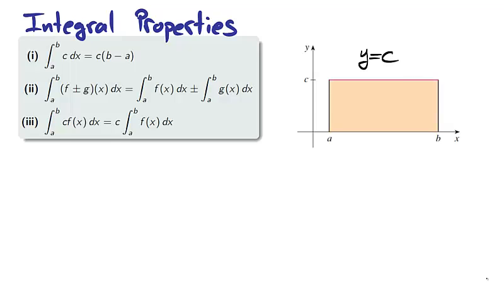For the first property, we're taking the integral of a constant function c. Notice that a constant function will have rectangular area under its curve. The height of the box is the constant value c, and the width of the box is b minus a. So the definite integral is the area of the rectangle, c times (b-a).